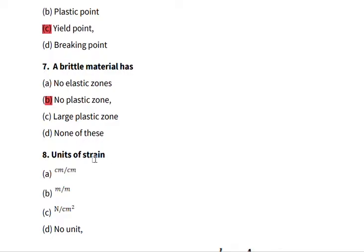Units of strain, among which of these is the unit of strain: centimeter per centimeter, meter per meter, newton per centimeter square, no unit. We know that strain is the elongation or the deformation per unit length, and that has no unit. Units of strain is dimensionless.